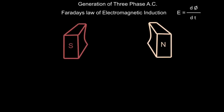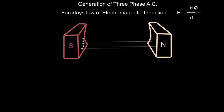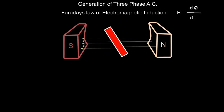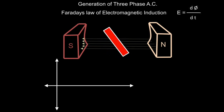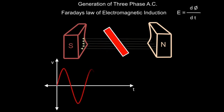According to this law, if we take two magnetic poles, there will be existence of flux from north pole to south pole. If we place one conductor in it and rotate that conductor, the flux linking with this conductor will change and the EMF or voltage will get induced in that conductor. If we plot that induced EMF with respect to time, we get this kind of sinusoidal variation.